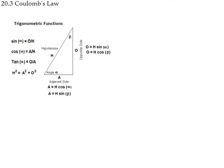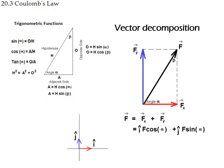To handle forces at angles, we need to decompose vectors into components. A force at an angle is equivalent to two forces: one along the x-axis and one along the y-axis. Using trigonometry with a right triangle — where the hypotenuse is h, the adjacent side is a, and the opposite side is o — we get: a = h·cos(α) and o = h·sin(α).